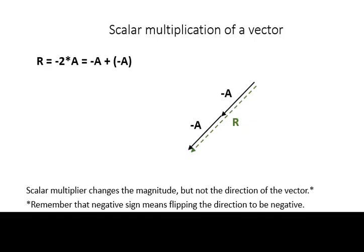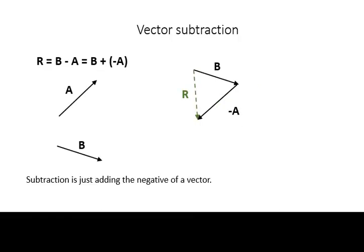Remember, however, that the negative sign for vectors is a direction. It means to turn the vector around to point in the opposite direction. It is the same as adding the negative of that vector.